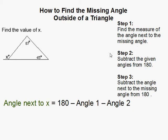I'm going to find the missing angle outside of a triangle. What this means is we usually have a triangle like this and we need to find the angle outside. In order to do that, we first need to find the angle inside here.